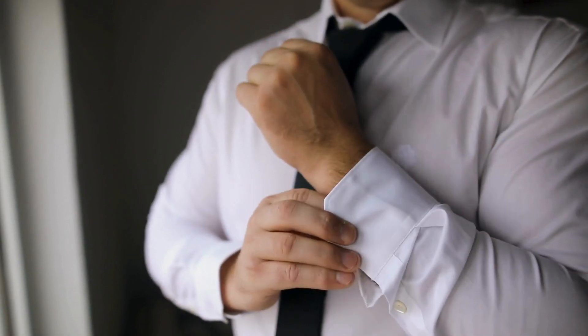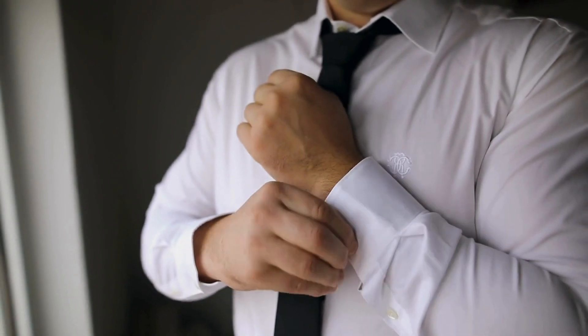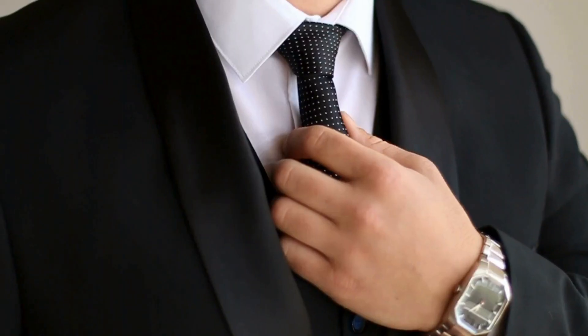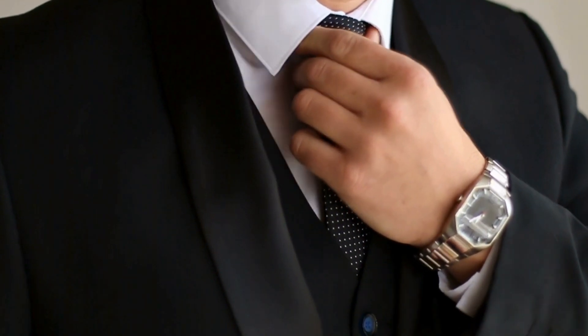Consider fashion trends, for instance. When you choose to wear a certain style of clothing, are you making a completely independent choice, or are you being influenced by a successful fashion meme that has evolved to be particularly appealing and spreadable? Memetics also offers fascinating insights into more complex systems of ideas. Religion, political ideologies, and scientific theories can be seen as vast memoplexes — groups of memes that work together to ensure their collective survival and spread. For example, many religions include memes about the importance of spreading the faith and the consequences of not believing, which work together to ensure the religion continues to be passed on through generations.